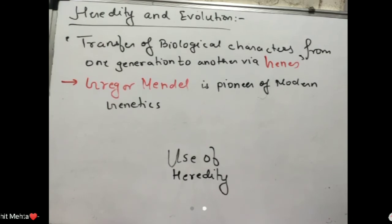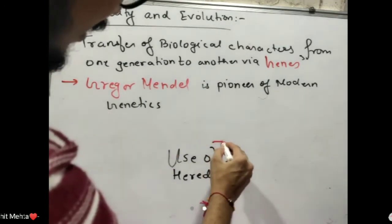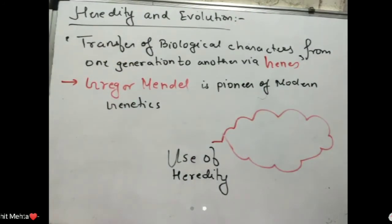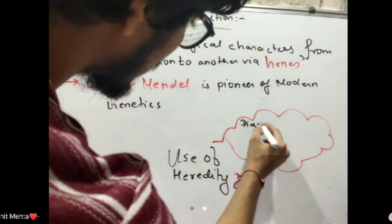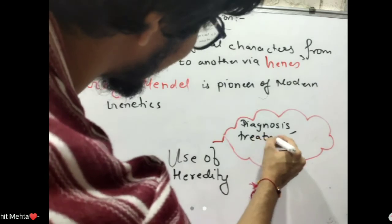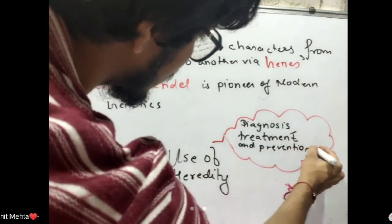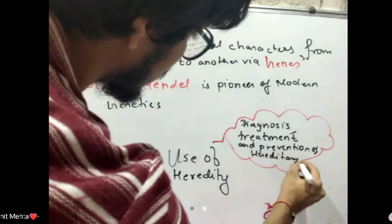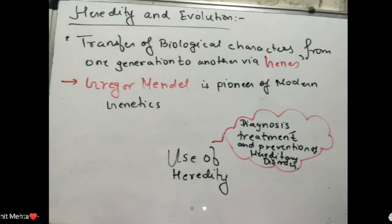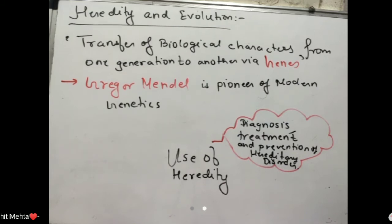Even diabetes, cancer, and a lot of other things can potentially be addressed. This science is useful in the diagnosis, treatment, and prevention of hereditary disorders. One day will come — maybe not in your lifetime, but a time will surely come — where diseases like cancer can be treated through genetic engineering technology that we are developing right now.